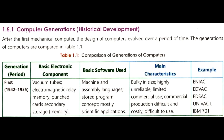Computer systems developed in the time period of 1942 to 1955 are categorized as first generation computers. Basic components include vacuum tube, electromagnetic relay memory, punch card, and secondary storage memory. Basic software used are machine and assembly language, stored program concepts, and mostly scientific applications. They are bulky in size, highly unreliable, costly, and difficult to use. Examples of first generation computers are ENIAC, EDVAC, EDSAC, UNIVAC 1, and IBM 701.